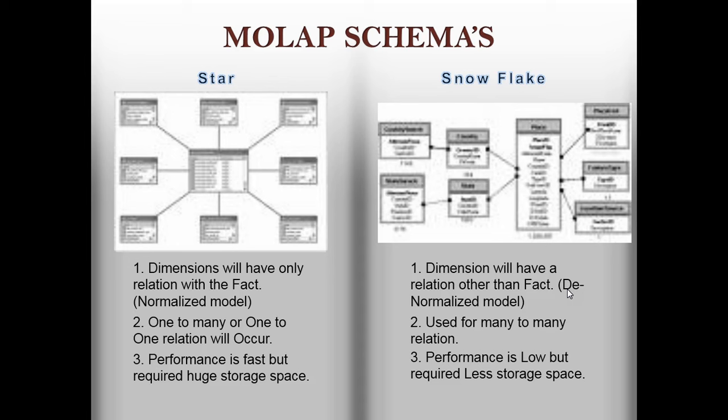In a star schema, in the center you have one fact table which contains the measure fields, and all the remaining fields are dimension tables. All dimension tables are related to a single fact table through relationships, which is called a star schema. Star schemas are more structural.